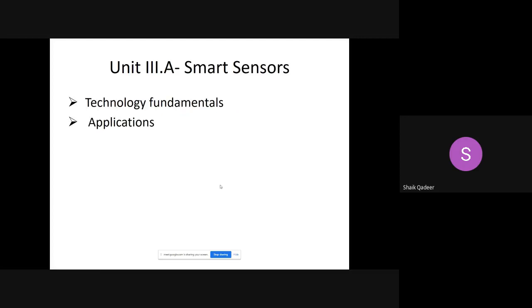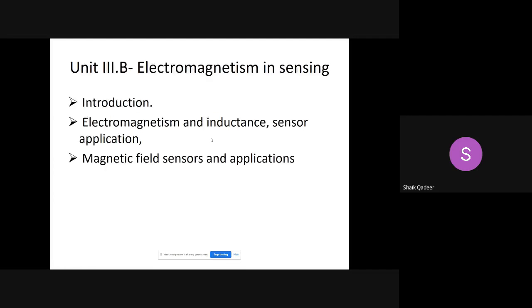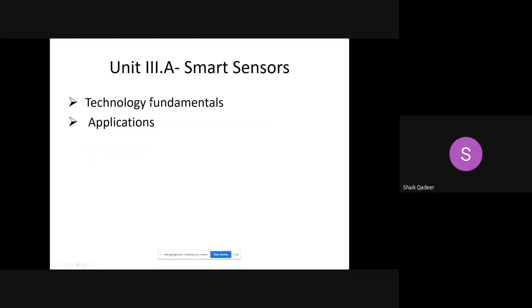Unit 3 comprises of two parts. Part A is smart sensors and Part B is electromagnetism in sensing. Smart sensors are nothing but a sensor which is equipped with additional components like analog to digital converter, filters, amplifiers, followed by most important thing, a microcontroller in which decision-making capability or computing capability is available. After seeing some of the technology fundamentals, we see smart sensors applications.